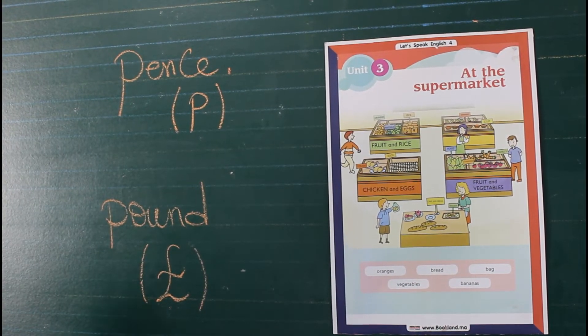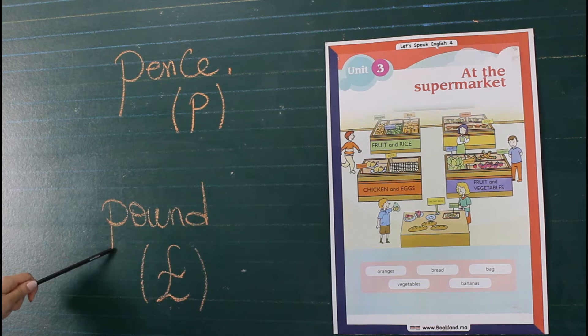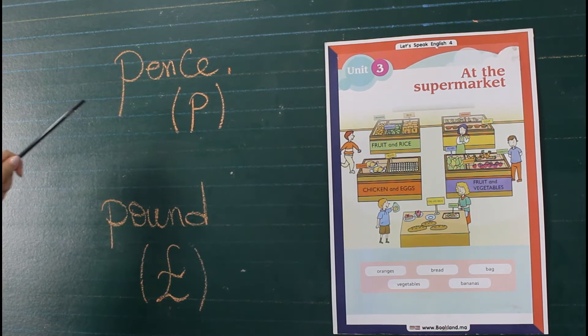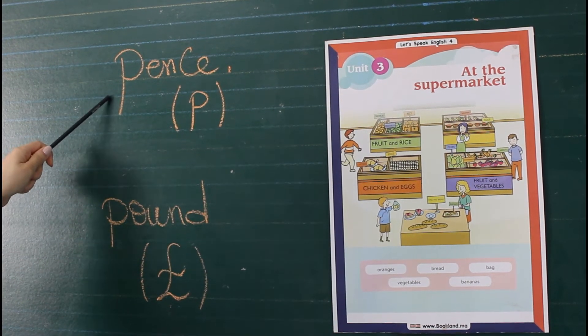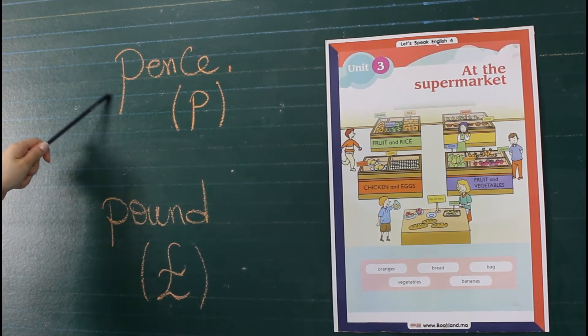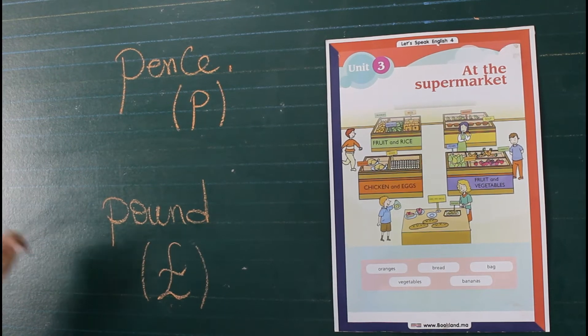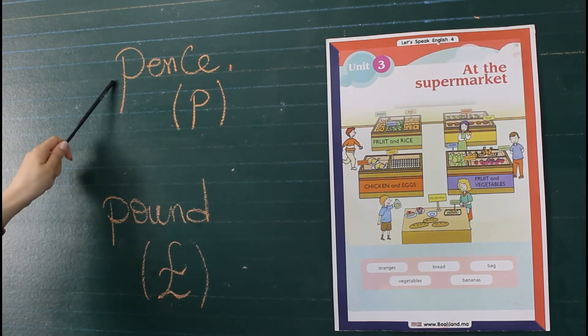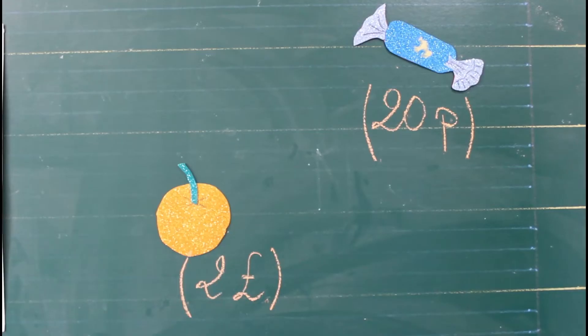To talk about price, we use pounds and pence. Pound. Pence. Let's take an example.